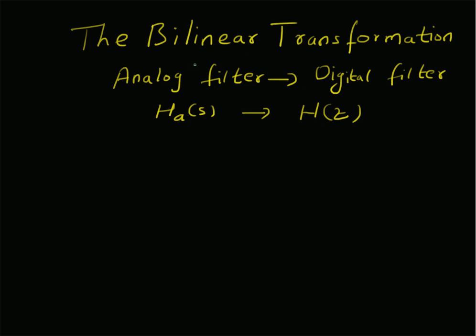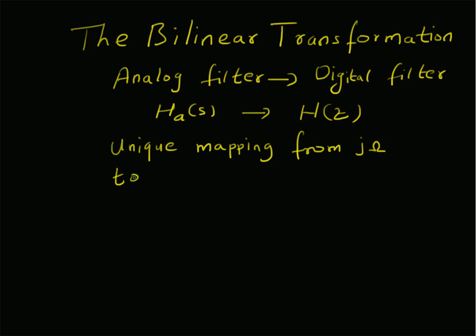Specifically, we will derive the relation between s and z for the bilinear transformation. The main advantages of this transformation are that it has a unique mapping from jω to the unit circle — that is, jω is in the s-plane and the unit circle is in the z-plane — and this mapping is unique.